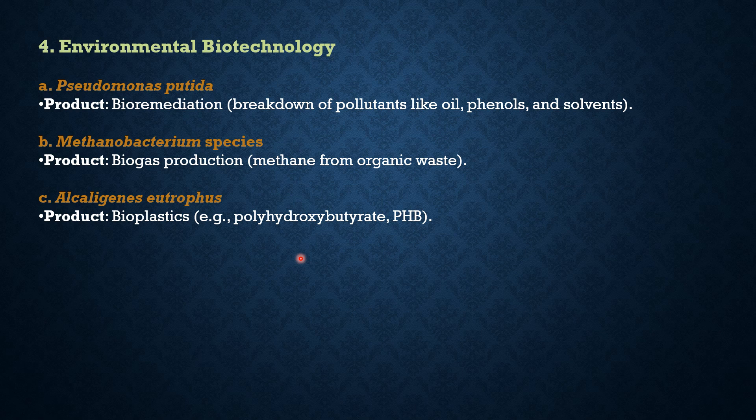Alcaligenes eutrophus is used in bioplastic production, specifically polyhydroxybutyrate (PHB). The advantage is that bioplastics are biodegradable, making them environmentally friendly. The limitation, however, is that these bioplastics cannot be used everywhere due to practical and production constraints.